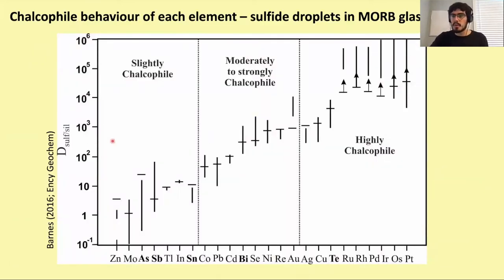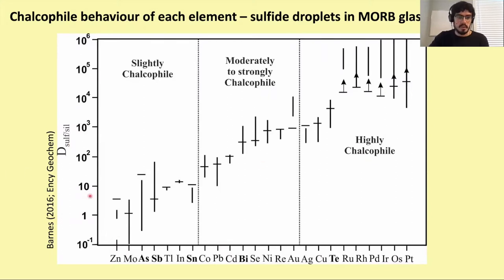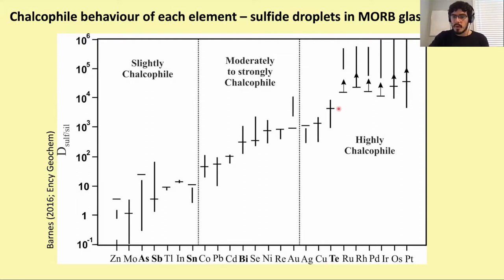When we say different partition coefficients, we mean the affinity between sulfide and silicate liquid. All chalcophile elements are collected by sulfide liquid — that's the most accepted model. They can be slightly, moderately, or highly chalcophile depending on their partition coefficients. Slightly chalcophile elements have very low partition coefficients; highly chalcophile elements like PGEs have very high partition coefficients into sulfide liquid. Among the TABS elements, tellurium is very highly chalcophile, bismuth is moderately chalcophile, but arsenic and antimony — frequently associated with nanoclusters — are only slightly chalcophile.